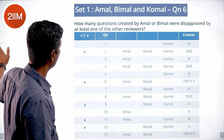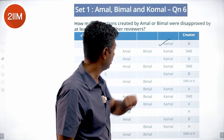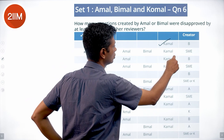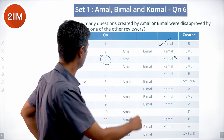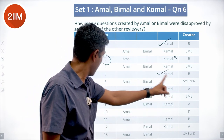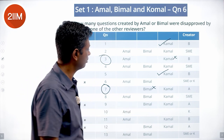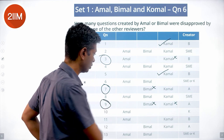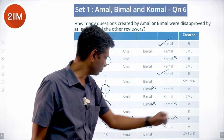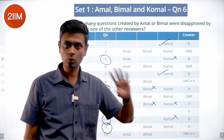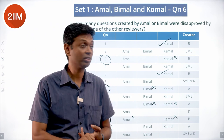How many questions created by Amal or Bimal were disapproved by at least one of the other reviewers? Q3 is created by Bimal and disapproved by Komal before going to Amal — counts. Q4 is created by Bimal, Komal approves straight away — doesn't count. Q7 is created by Amal, Bimal says no then it goes to Komal — counts. Q9 is created by Amal, Bimal rejects then Komal also rejects — counts. Q11 is created by Bimal, Komal says no and then Amal says no — counts. Q12 is created by Amal, Bimal rejects and Komal rejects — counts. The total is 5: Q3, Q7, Q9, Q11, and Q12.